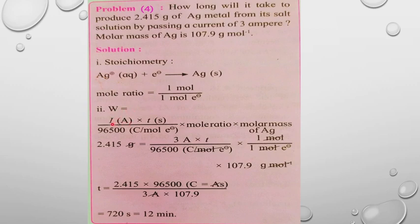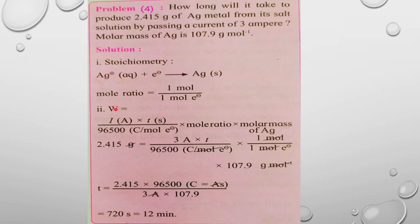The formula is: W = (I × t) / F × mole ratio × molar mass, where t is time in seconds and one Faraday equals 96,500 coulombs per mole. We substitute to find W, the mass of the product.